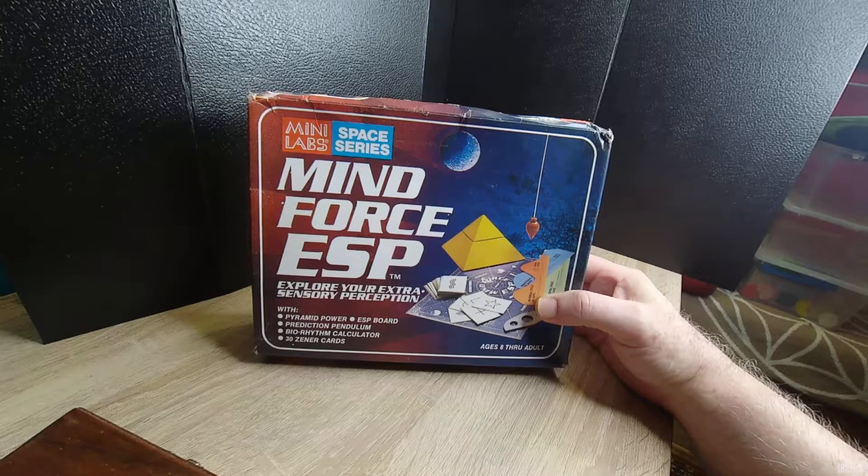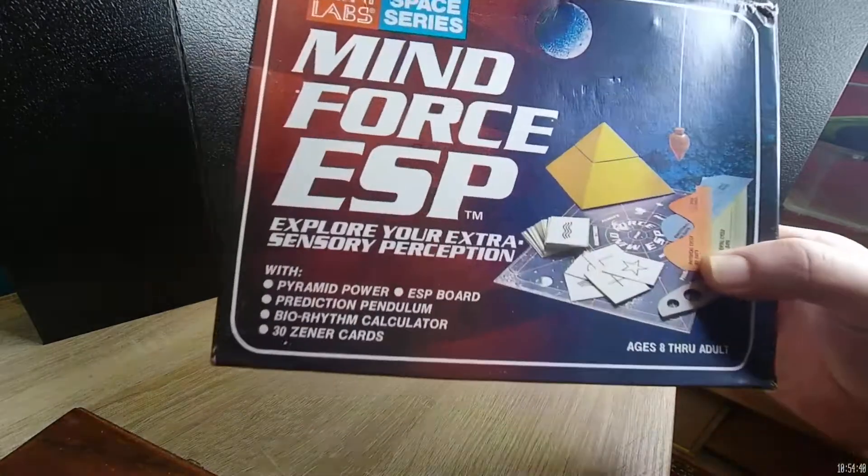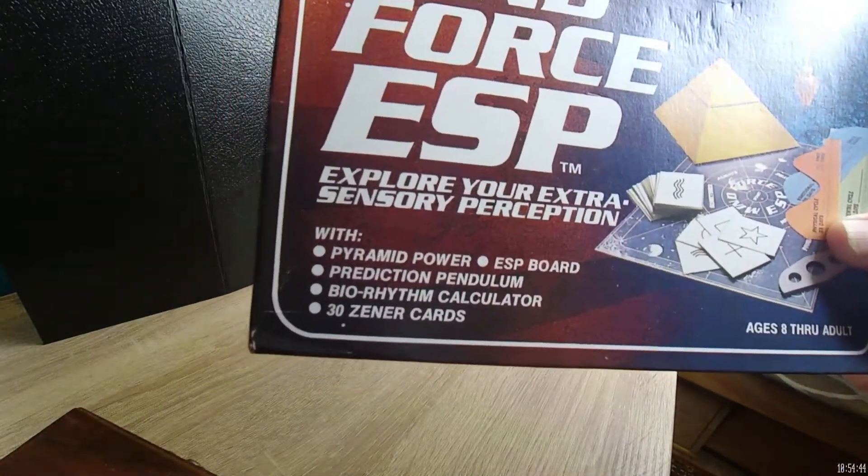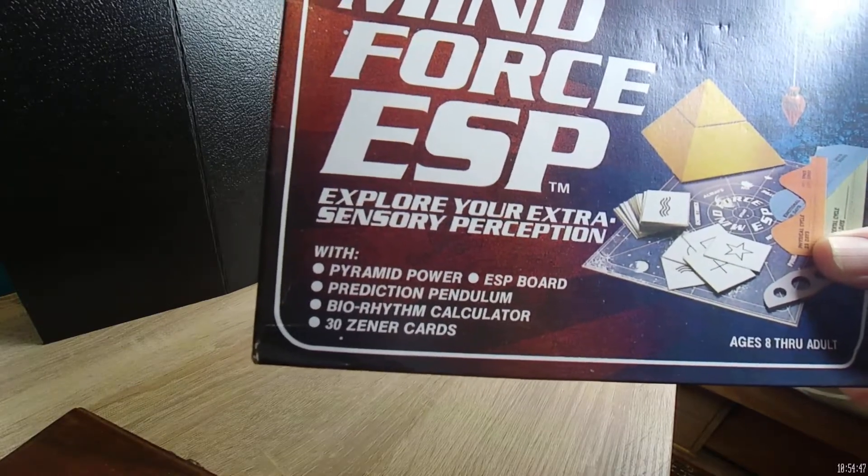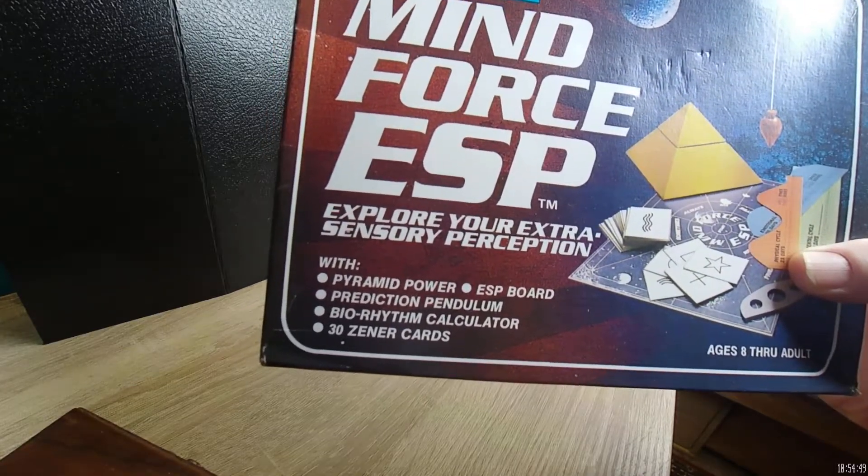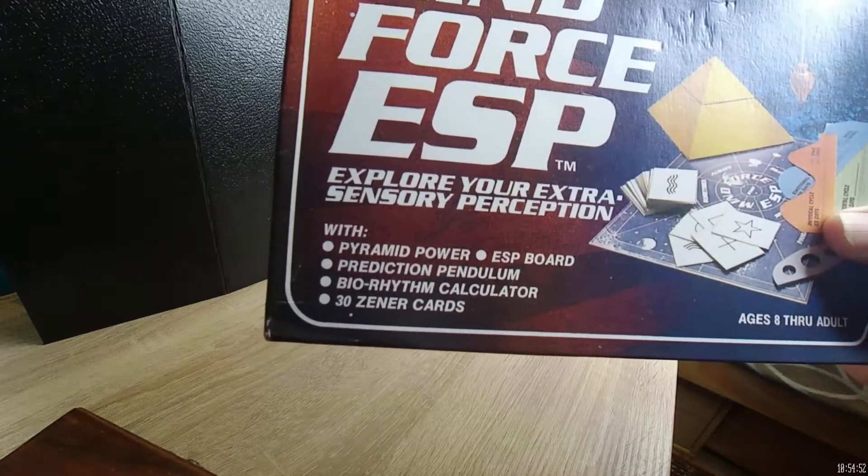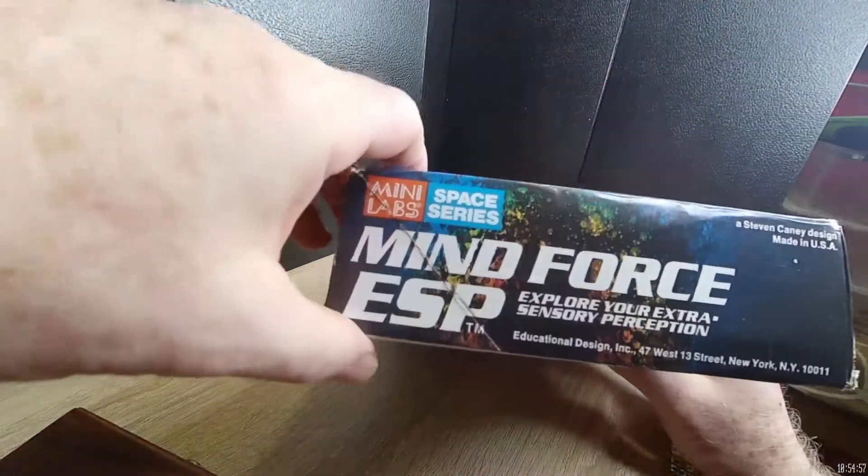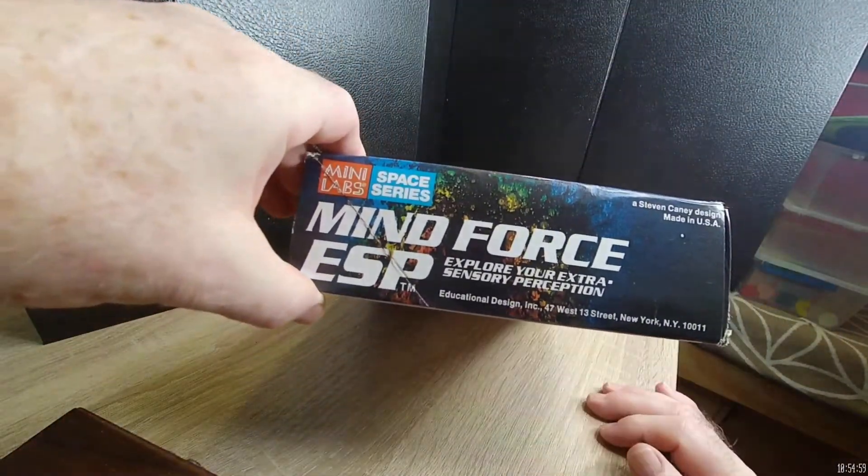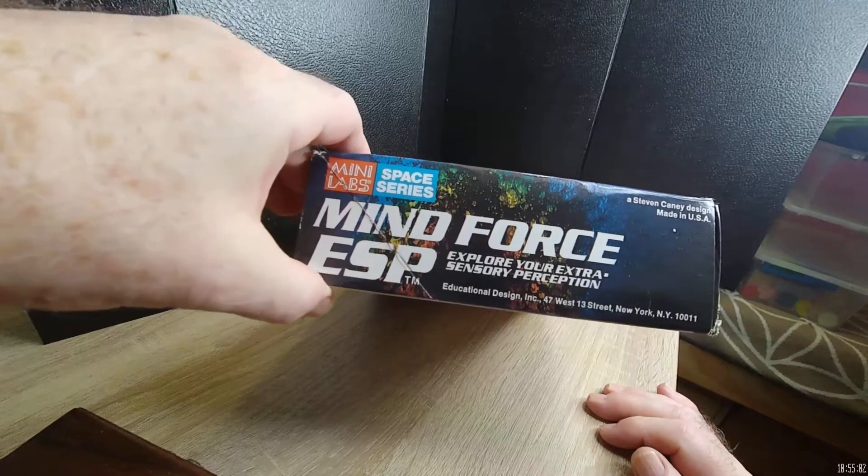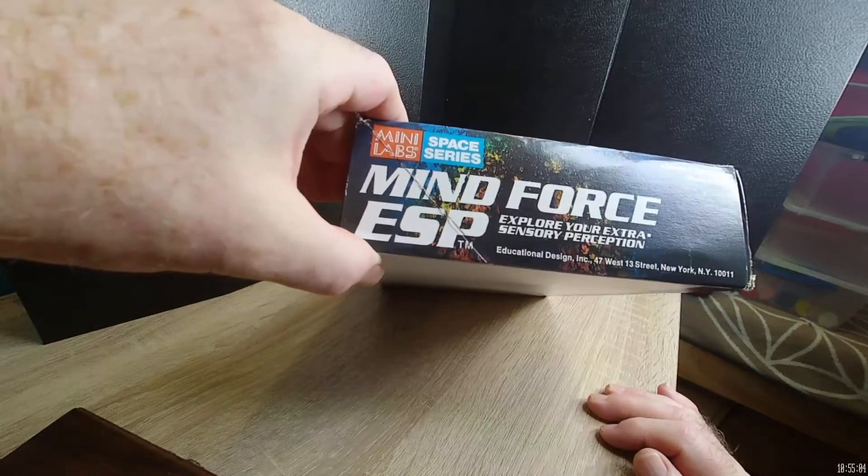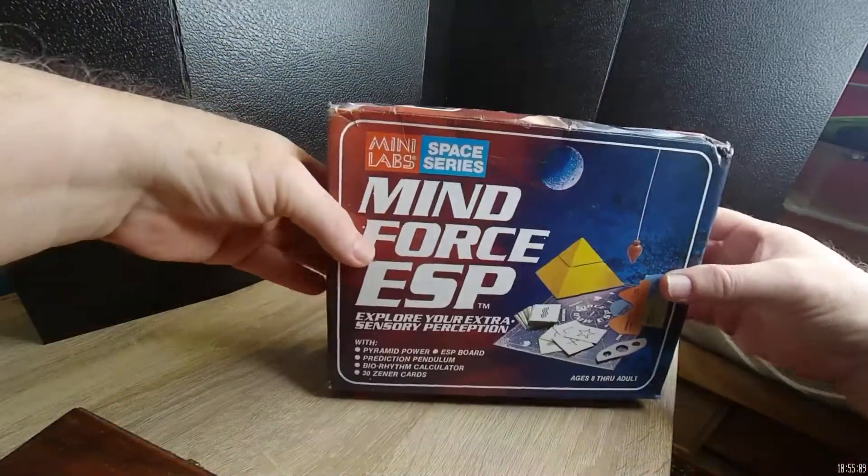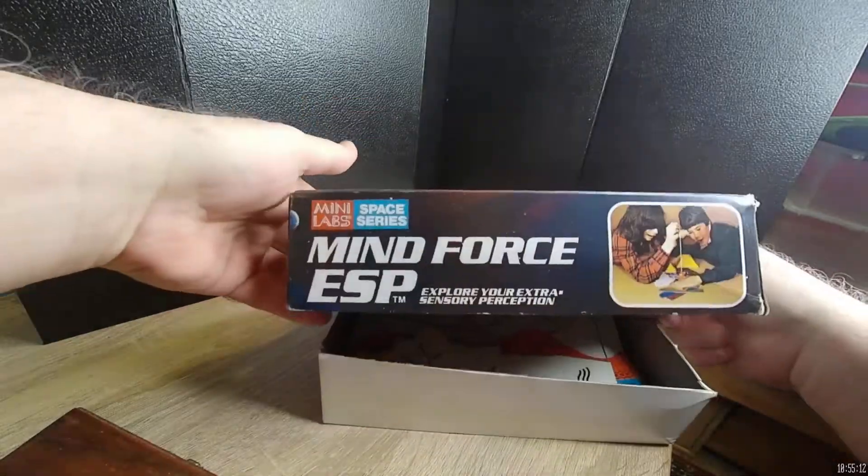It covers kind of everything and this is something that was in the stores readily found for a low cost at the time. You get a pyramid, an ESP board, a prediction pendulum, a bio rhythms calculator and 30 classic Zener cards. This was created by famous architect designer Steven Caney who is even working to this day, he's still alive and works on a lot of different specialized products.